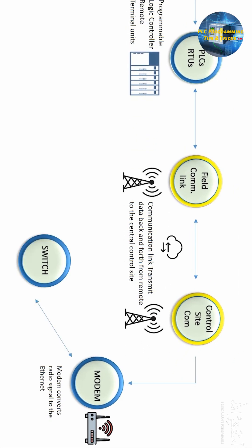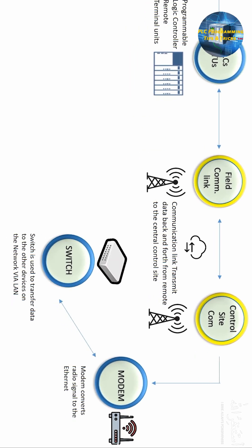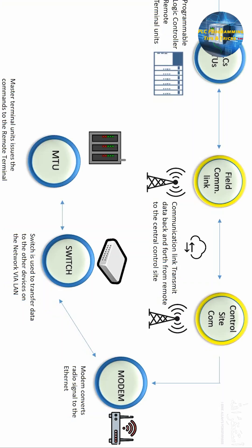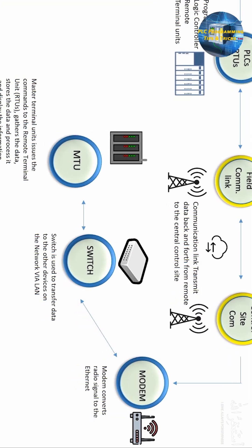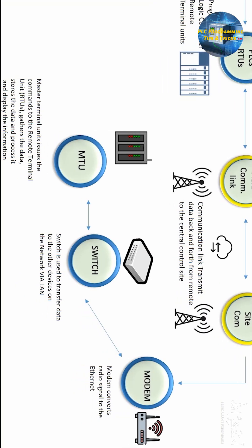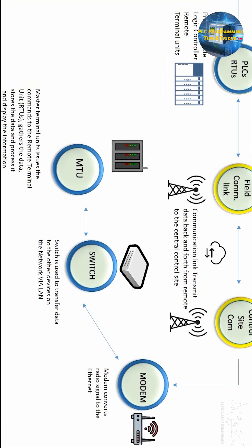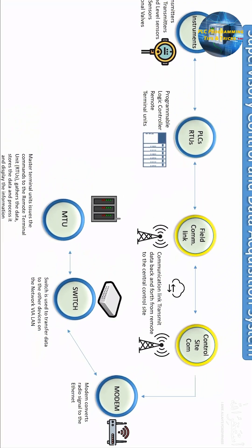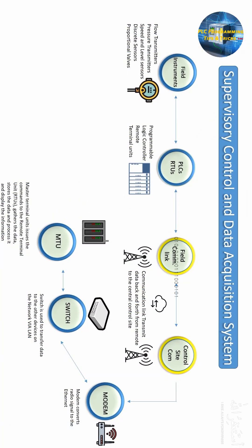Once the data is received at the central control site, it is converted to Ethernet using a modem. After that, the modem is connected to an Ethernet switch, which acts like a central line hub. This switch is then connected to the MTU — the Master Terminal Unit.